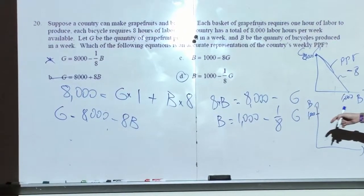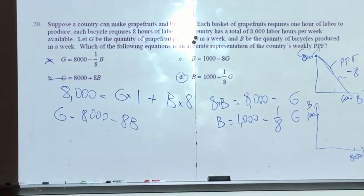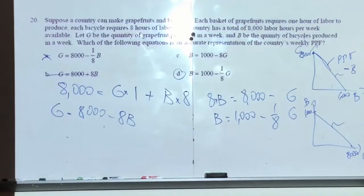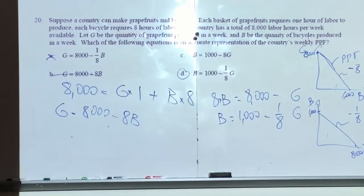Because if we spent all of them on B, I get 1,000. This is 8,000. What's the slope? Negative 1 over 8.